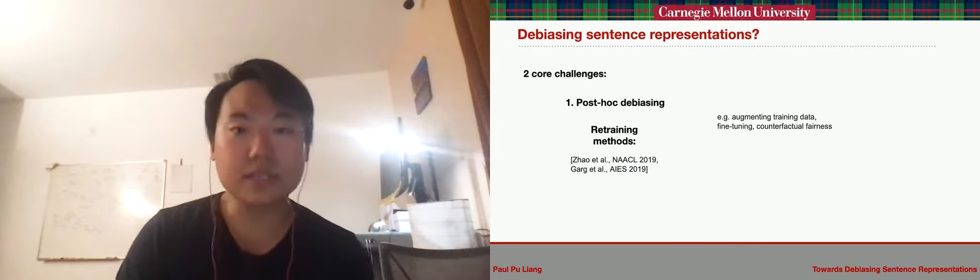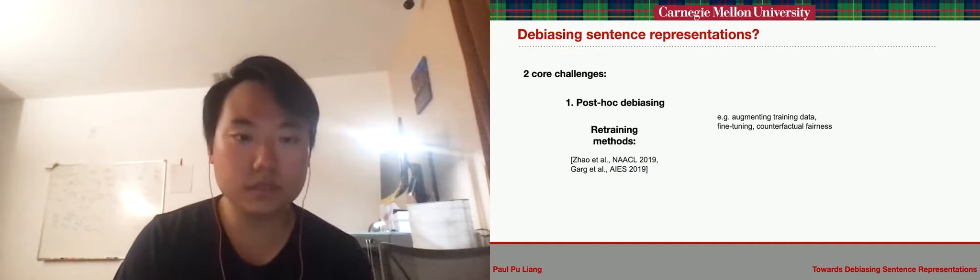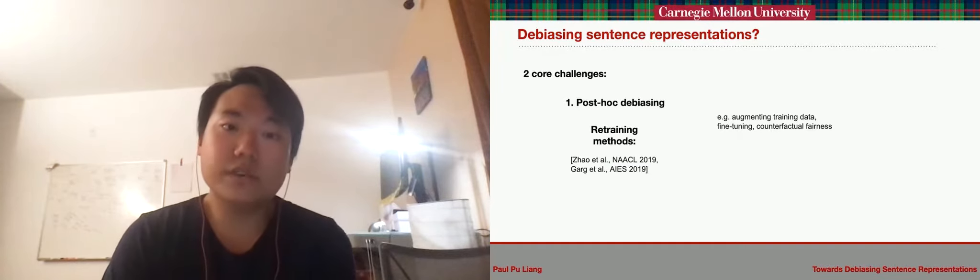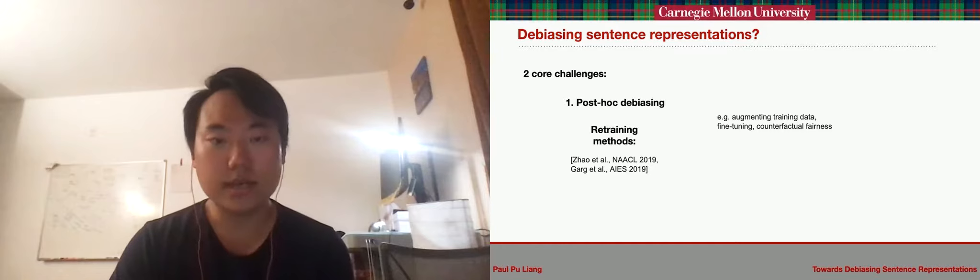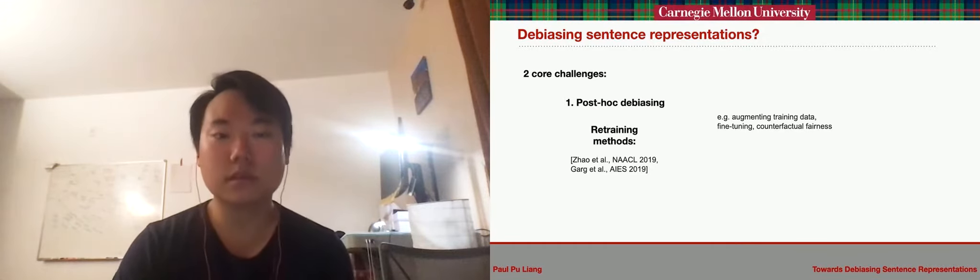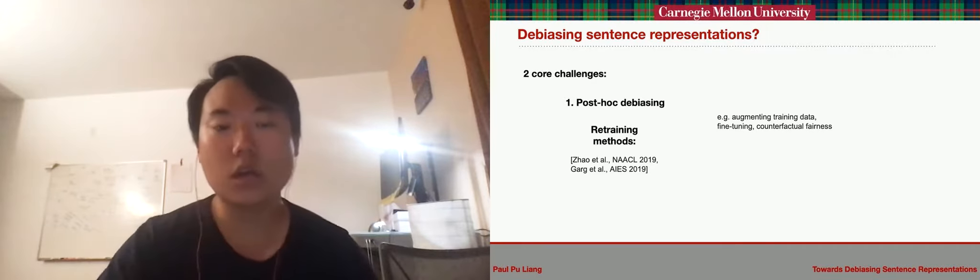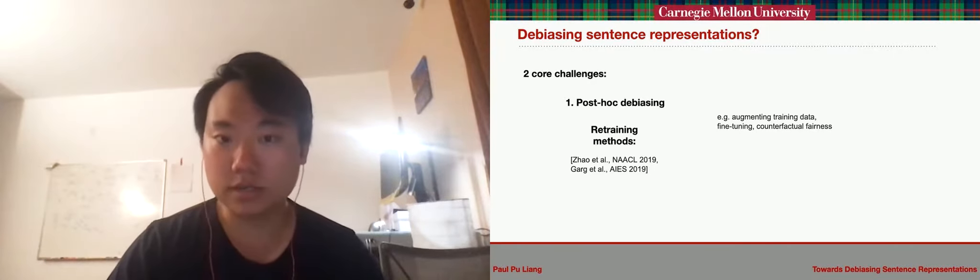Debiasing sentence representations is difficult for two reasons. Firstly, it is usually unfeasible to fully retrain many of these state-of-the-art sentence-embedding models since they are trained on massive amounts of text using many resources. As a result, it is difficult to retrain a new sentence encoder whenever a new source of bias is uncovered from data.